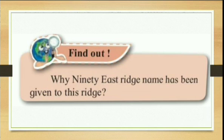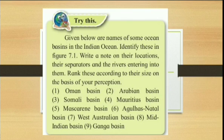Again, 'Note down where is the 90 East Ridge and why it has been given this name' — this activity for students has been eliminated. Next, 'Let's Try This' — also an activity where a figure is given and you have to plot things in it — that is also eliminated.